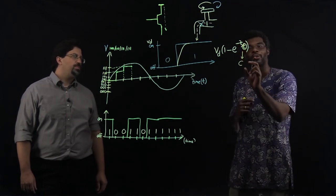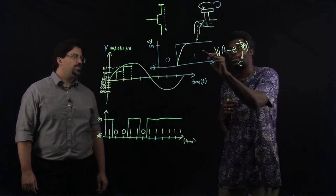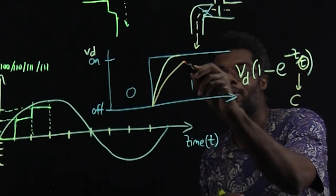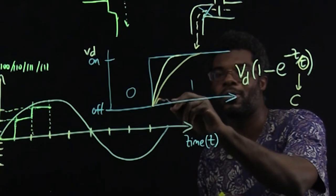The smaller the capacitance, the faster you get to the top. The larger the capacitance, the slower you get to the top.